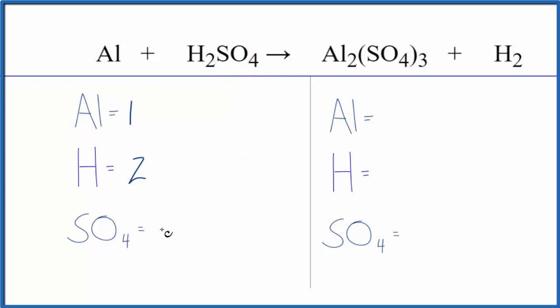We have one sulfate ion here. On the product side, we have two aluminum, two hydrogens, and then the sulfate, that sulfate ion again, we have three of those. So we have three sulfate ions.